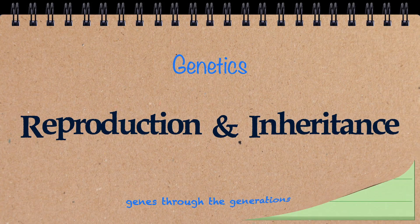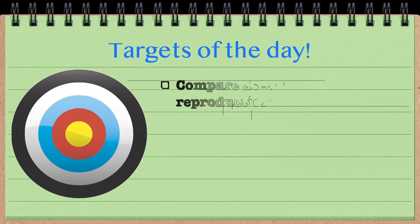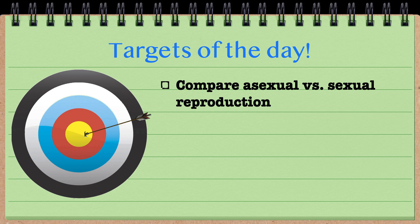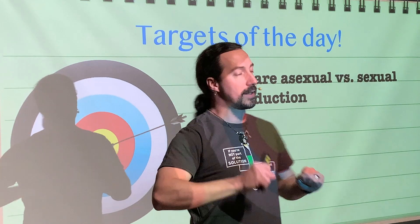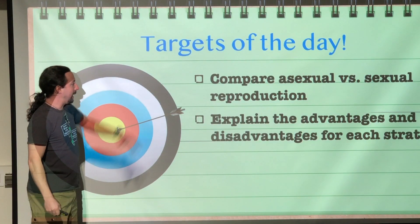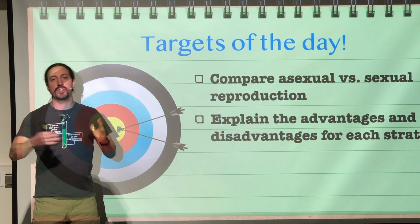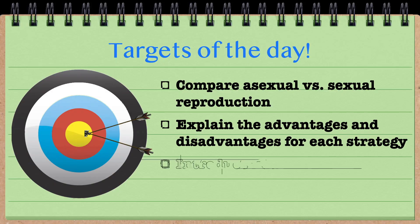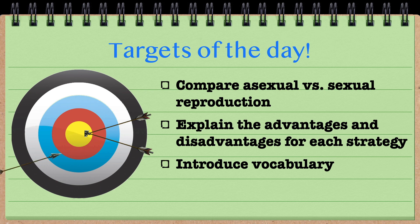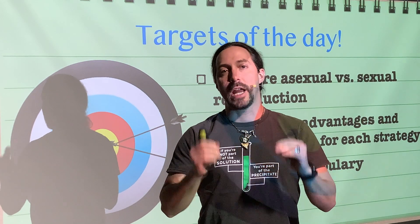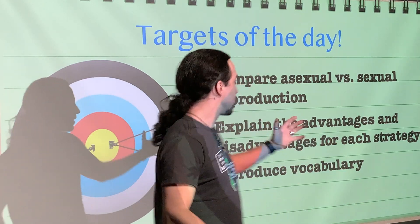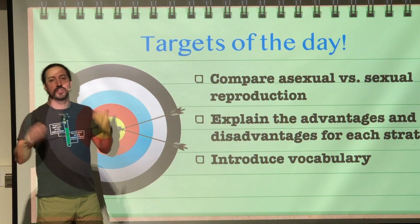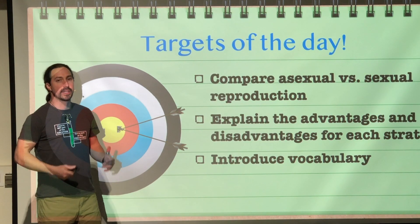Our learning targets for today are: first, we're going to compare asexual versus sexual reproduction — the two different ways that organisms can reproduce. Next, we're going to explain the advantages and disadvantages of each style of reproduction. And lastly, we are going to introduce vocabulary that we are going to use. Genetics is full of very specific vocabulary, which you have to understand to fully grasp what is going on.